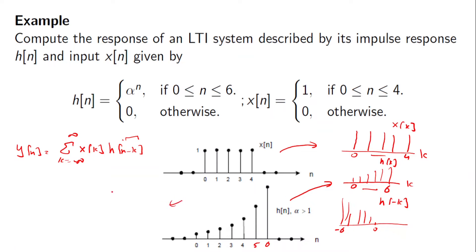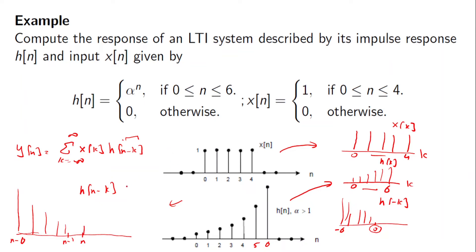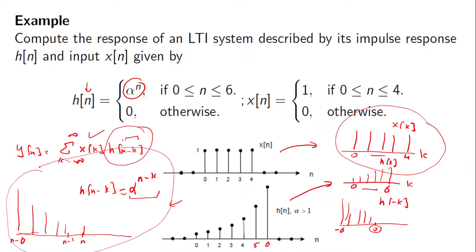What we actually need is h[n−k]: the argument shifts by n, so the head is at n and values go down to n−6. Since h[n] = α^n, h[n−k] = α^(n−k). These are the two functions x[k] and the flipped-and-shifted h[n−k] that we need, and we will be moving h[n−k] from left to right looking at its overlap with x[k].